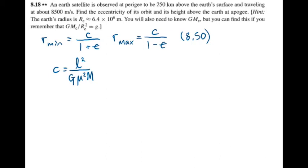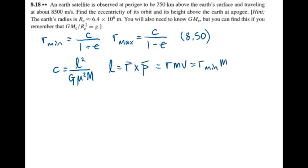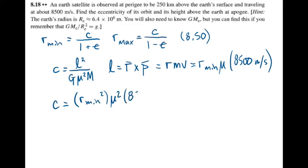First, let's solve for the value of C. Since we're not given the angular momentum, we're only given the velocity of the satellite. Angular momentum is equal to r cross regular momentum p, which in this case — because the velocity is tangential to the radius — is r times m times v. In this case that's going to be our minimum radius, times the reduced mass of the satellite, times 8500 meters per second. Let's plug that into C: we've got C equals r_min squared times mu squared times 8500 meters per second, squared, over the gravitational constant, mu squared, and the total mass.